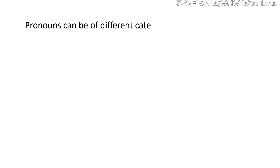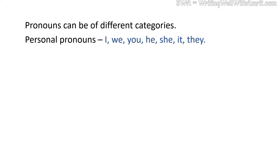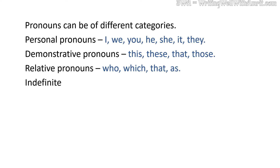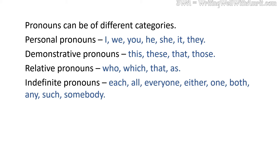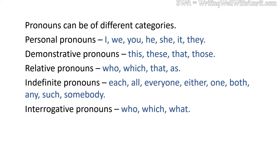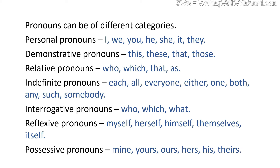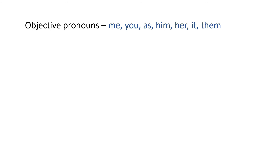Pronouns can be of different categories: Personal pronouns — I, We, You, He, She, It, They. Demonstrative pronouns — This, These, That, Those. Relative pronouns — Who, Which, That, As. Indefinite pronouns — Each, All, Everyone, Either, One, Both, Any, Such, Somebody. Interrogative pronouns — Who, Which, What. Reflexive pronouns — Myself, Herself, Himself, Themselves, Itself. Possessive pronouns — Mine, Yours, Ours, Hers, His, Theirs. Objective pronouns — Me, You, Him, Her, It, Them. In fact, the list goes on and on.